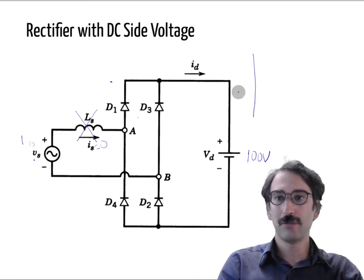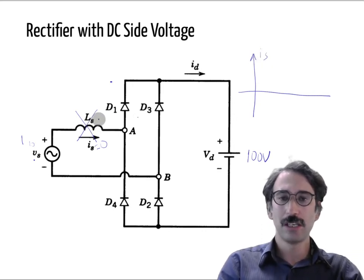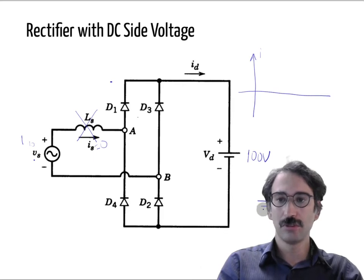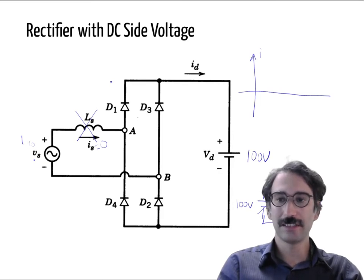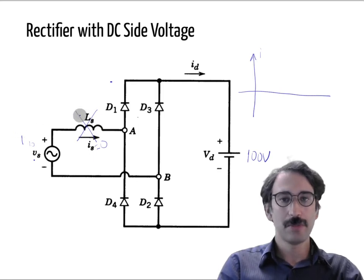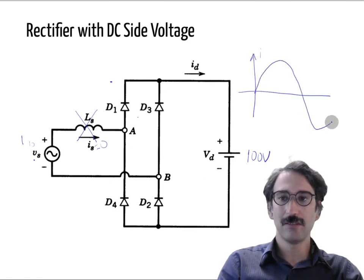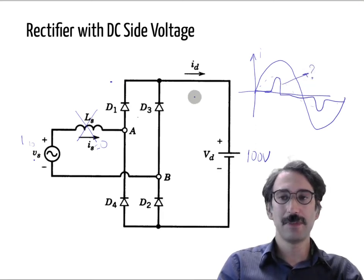Thinking about the source current: without any inductance, you would be connecting two voltage sources in parallel, which is a problem. If one is 90 volts and the other is 100 volts and everything is ideal, the current would be infinite. In reality we have inductance and resistance. With inductance present, the current will not look like a fundamental sinusoid — it will be zero most of the time and have peaks, like spikes.